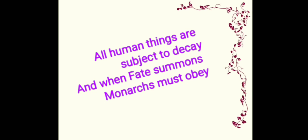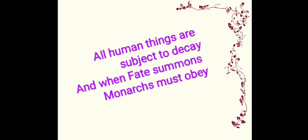Shadwell was addicted to poppies — a weed from which drugs are made — and he used to consume those drugs. So instead of a crown, poppies are made in the form of a crown and placed on his head. When Rome was founded, Romulus was visited by 12 vultures, which was a good omen. Here, because the realm of nonsense is to be established, 12 owls come to visit Shadwell, and all the nonsensical writers who attended the coronation are very happy, considering this an auspicious thing — just as Romulus was visited by 12 vultures.